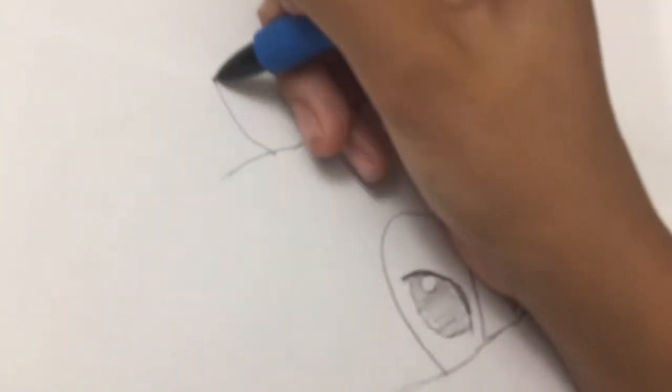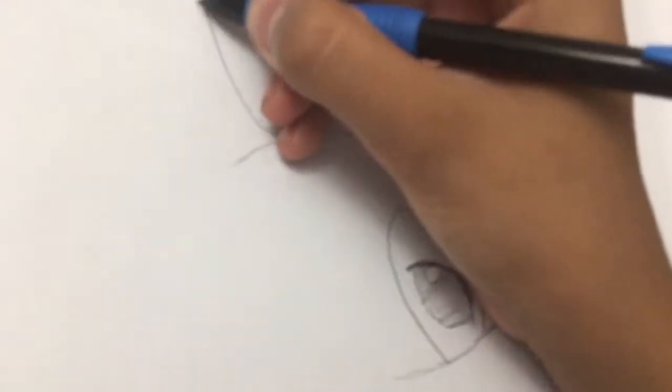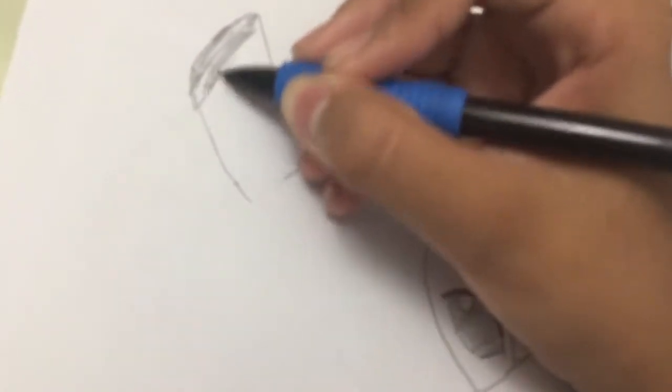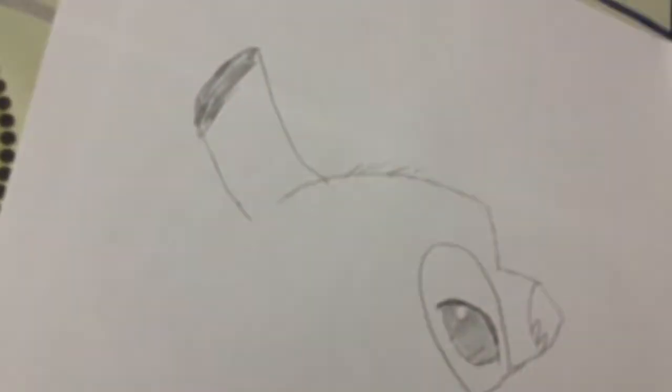Now for his ears, we're going to draw a curve and go up and in, like this. And shade this part in. So there's one ear.